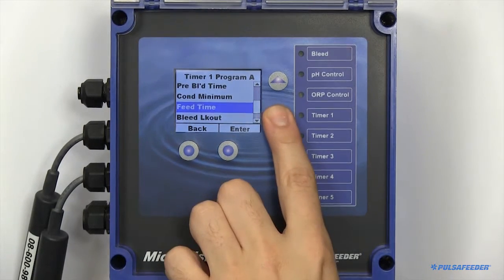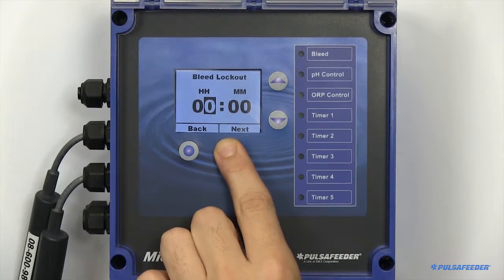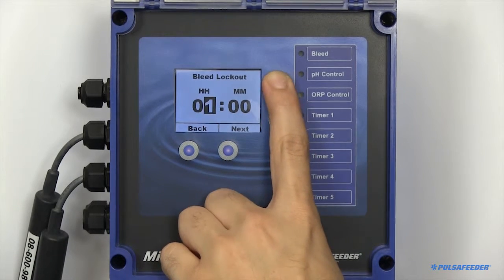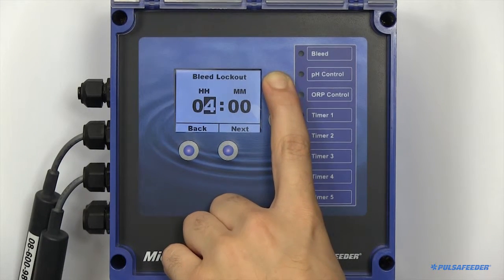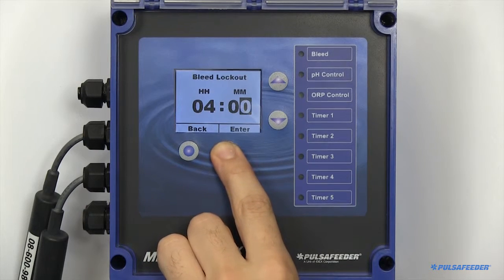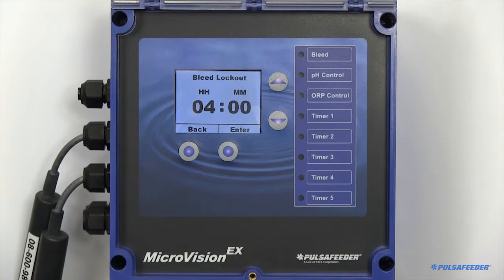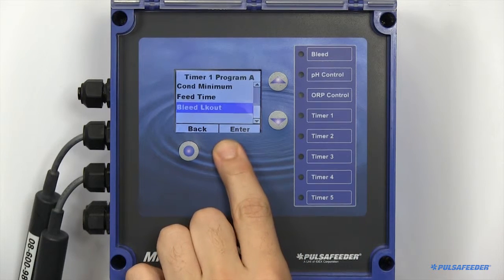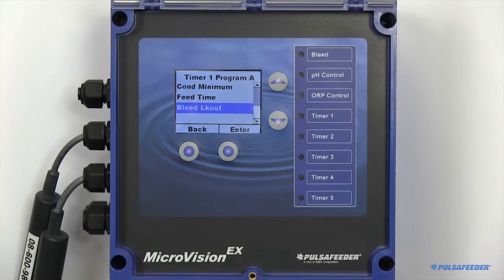To prevent your tower from bleeding costly chemicals, you can also set a bleed lockout, or the amount of time you would like to prevent your tower from bleeding water from the system. Note that this timer begins when your feed cycle begins. For the lockout to last longer than your feed time, please specify it as such.